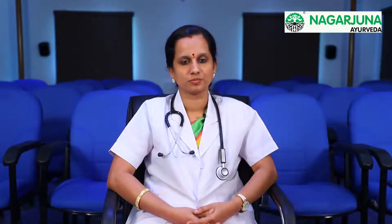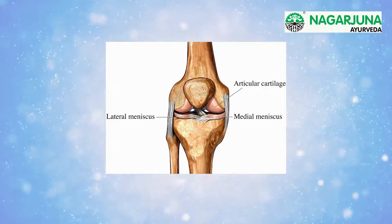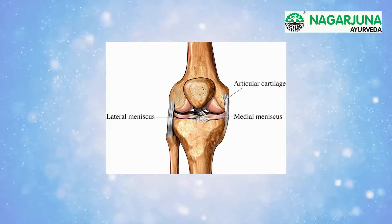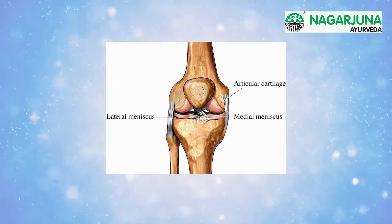Osteoarthritis is the most common form of arthritis in the knee. It is a degenerative, wear-and-tear type of arthritis that occurs most often in people 50 years of age and older, but may occur in younger people too. In osteoarthritis, the cartilage in the knee joint gradually wears away.